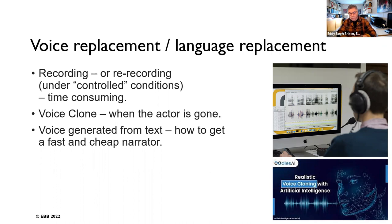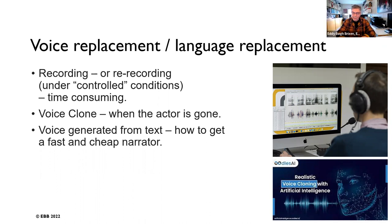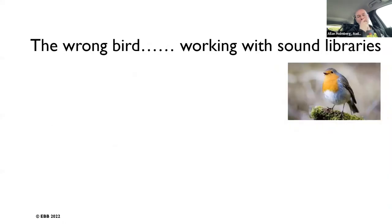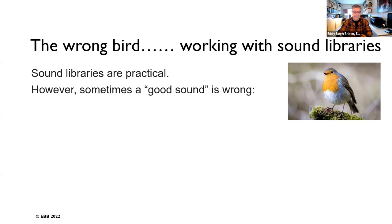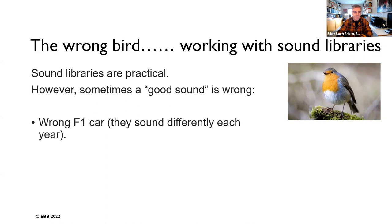There is also voice cloning software. If an actor is gone and a few words need to be repeated, you can clone their voice from existing recordings. Sometimes when there's no second unit, there is the 'third unit' — the sound effects archive. Sound libraries are very practical, but things can go wrong. For instance, picking an F1 car sound from the wrong year, or using a bird species that doesn't live in the correct part of the world — someone will always notice.